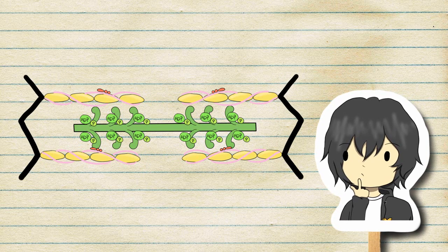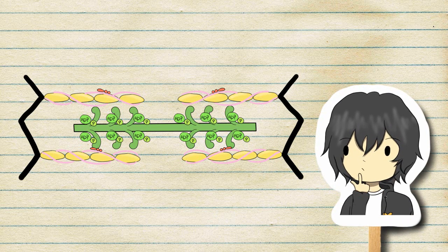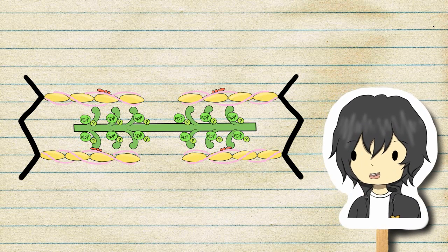ATP breaks down the myosin cross bridges and the muscle fiber remains ready for further stimulation. And that's how it works.